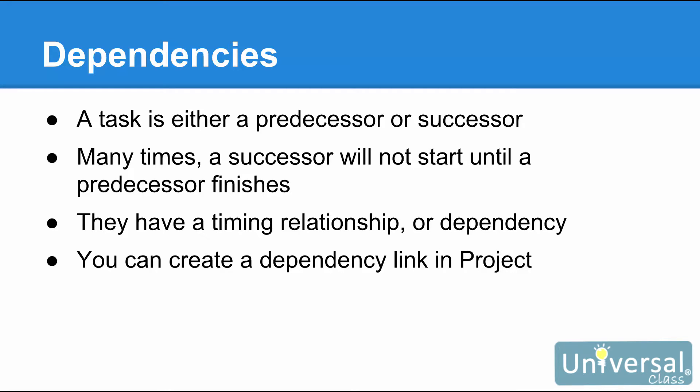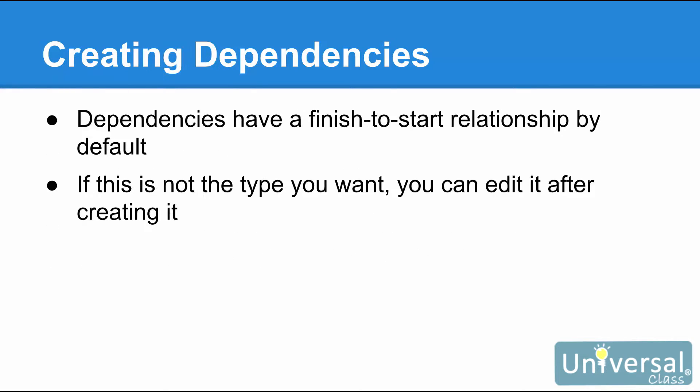In Project 2016, you create a dependency link. This link will cause a task to either occur before or after another task, or to begin or end during the duration of another task — in other words, it gives them a timing relationship. Whenever you create a dependency, it is a finish-to-start relationship by default. This means one task must finish before another begins.